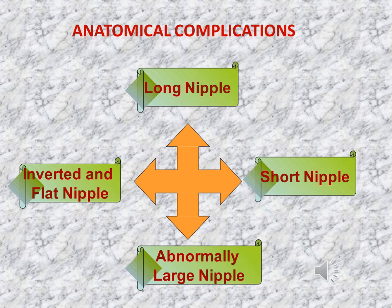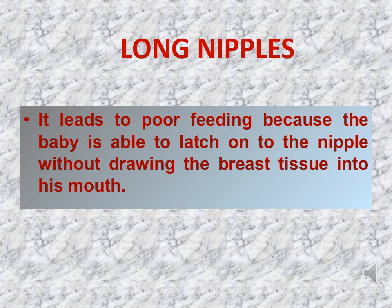Anatomical variations in the breast include long nipple, inverted and flat nipple, short nipple, and abnormally large nipple. Long nipple leads to poor feeding because the baby is able to latch on to the nipple without drawing the breast tissue into the mouth. Feeding will be poor because the baby is not able to get its mouth into the correct position around the nipple.